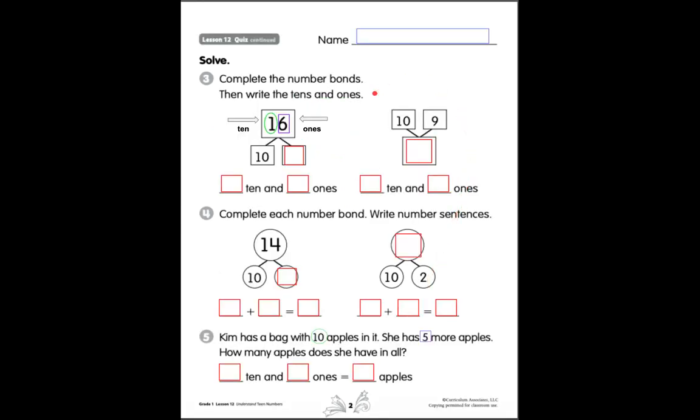The next page is number three. Number three says complete the number bonds then write the tens and ones. I've circled the tens of number 16 in green and I put a box around the ones of 16 in purple. Here's my ten number and my ones number.